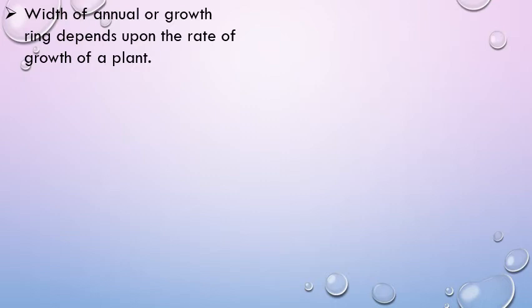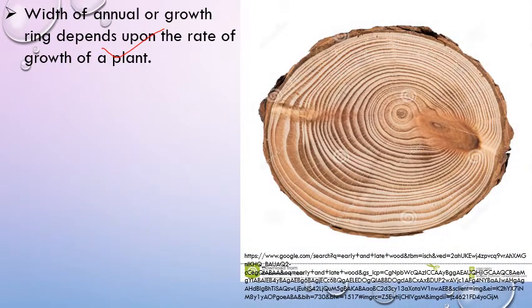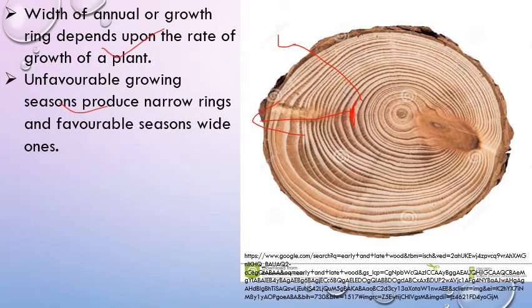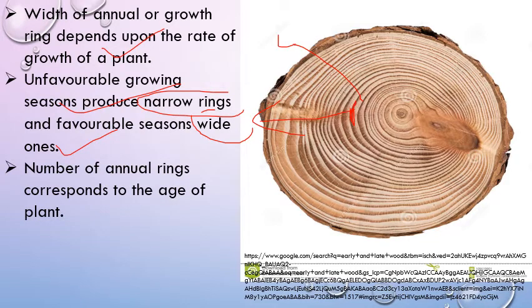The width of annual ring depends upon the rate of growth of the plant. If conditions are favorable, the size of the annual ring will be larger; if not, the size will not be bigger. By calculating these layers, we can calculate the age of a tree. Unfavorable growing seasons produce narrow rings, like winters, while favorable seasons produce wider ones. The number of annual rings corresponds to the age of the plant.